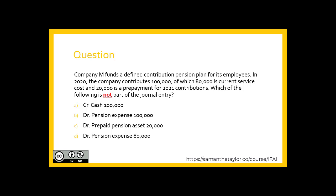Is it A, a credit of cash of $100,000? B, debit pension expense of $100,000? C, debit prepaid pension asset of $20,000? Or D, debit pension expense of $80,000?